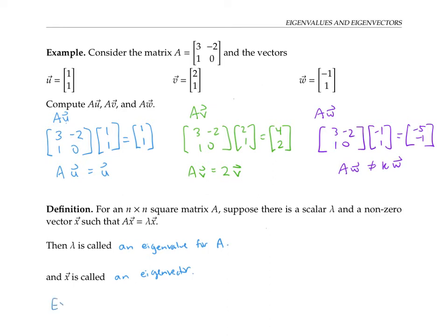In the above example, we had that A times u was equal to u — I'll write that as A times u equals one times u. And we also had that A times v is equal to two times v. So one and two are eigenvalues for A, and u and v are the corresponding eigenvectors.